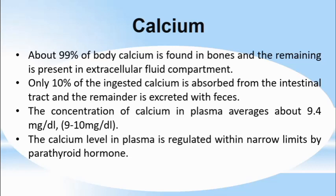The first electrolyte we will discuss is calcium. About 99% of body calcium is found in bones, and the remaining 1% is present in the extracellular fluid compartment. Only 10% of ingested calcium is absorbed from the intestinal tract and the remainder is excreted with feces. The concentration of calcium in plasma averages about 9.4 mg per deciliter. The calcium level in plasma is regulated within narrow limits by parathyroid hormones.